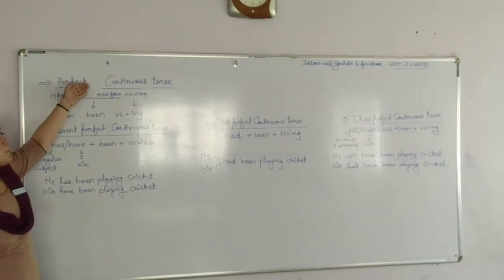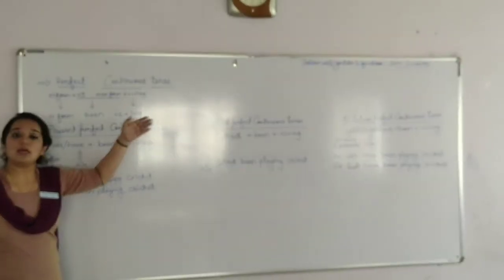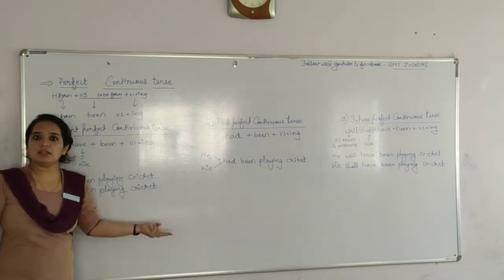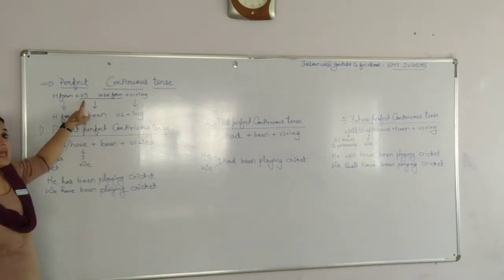But the thing is that perfect continuous form is the combination of two. We have to combine these two. So, how do we get the structure?